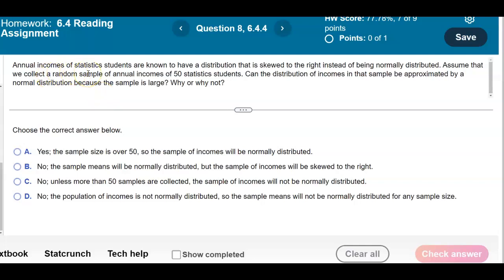Annual incomes of statistics students are known to have a distribution that is skewed to the right instead of being normally distributed. Assume that we collect a random sample of annual incomes of 50 statistics students. Can the distribution of incomes in that sample be approximated by a normal distribution because the sample is large? Why or why not?